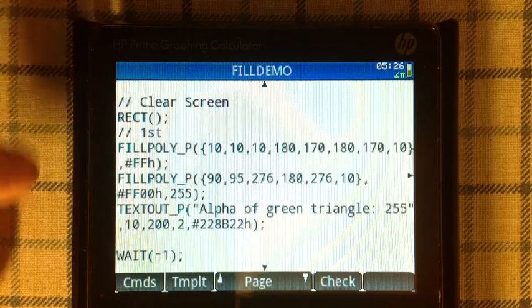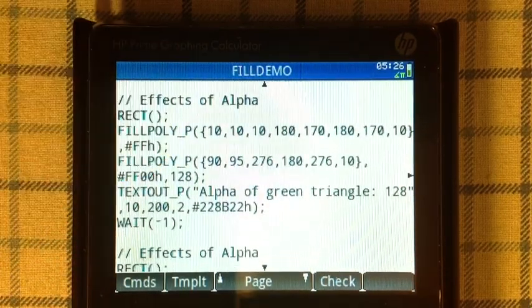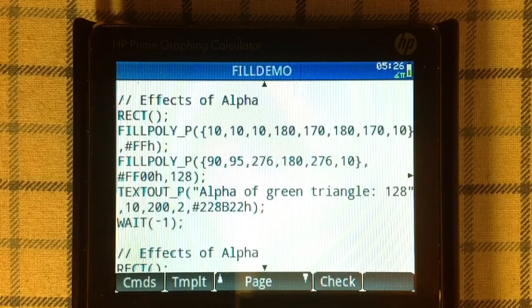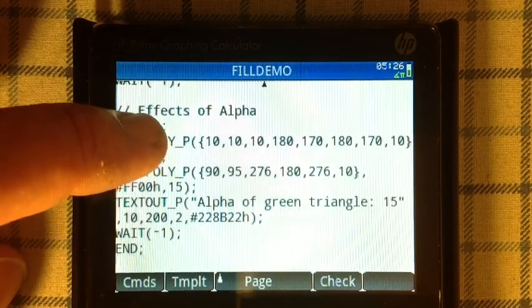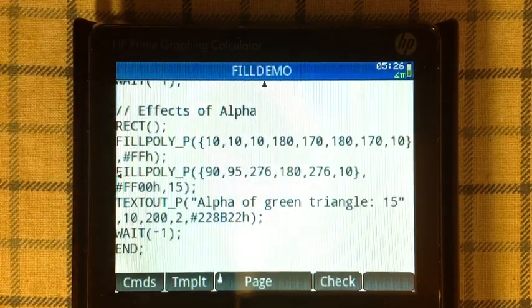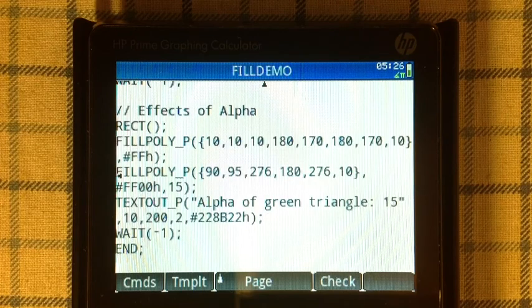Here's the second screen, and then the last screen right here. This program FILLDEMO is going to show you how the alpha argument affects the triangle throughout the program.